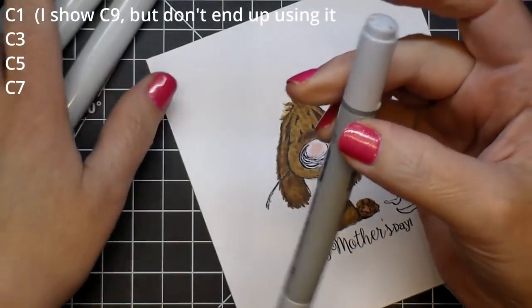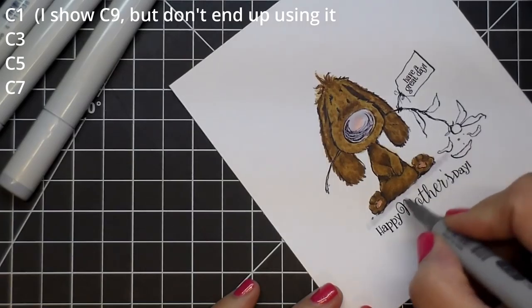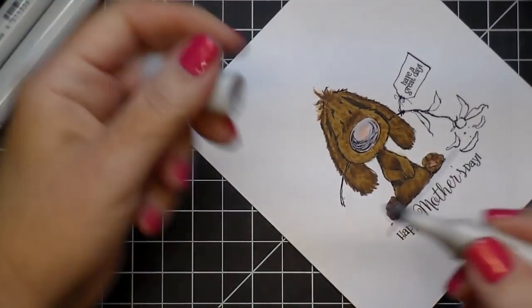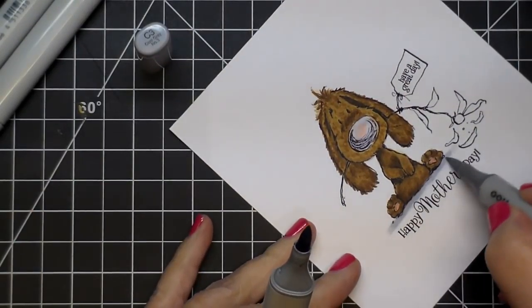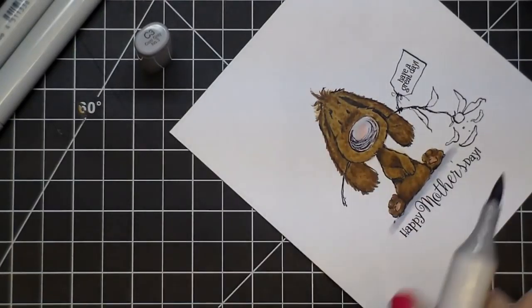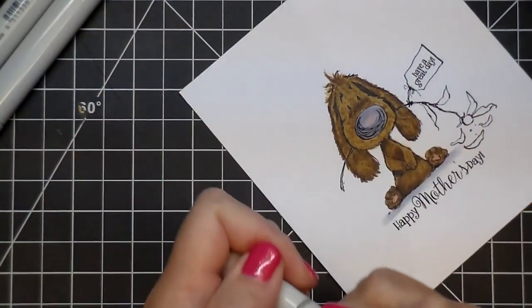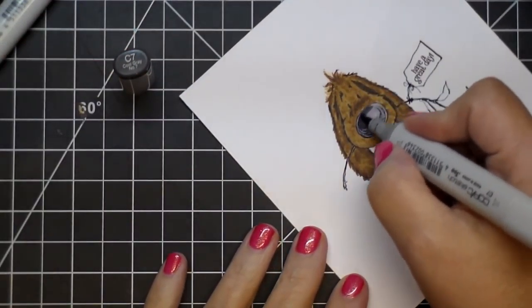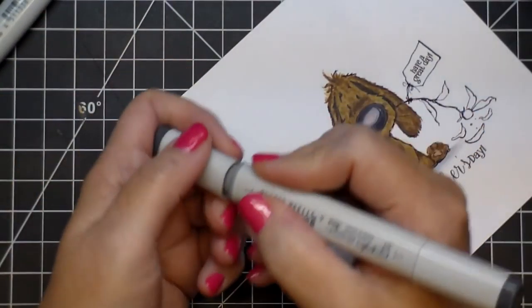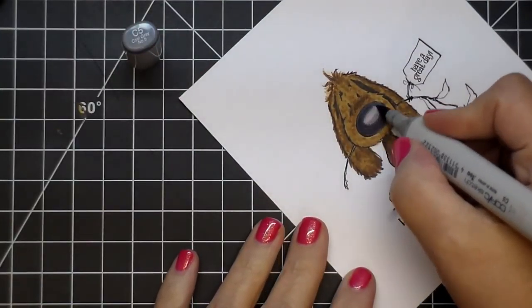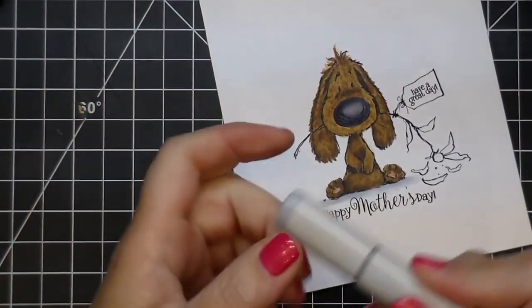Here I'm pulling out my cool grays: C1, C3, C5, and C7. I also showed you C9, but I end up not using C9, so I used a little bit of C1. I'm going back with some C3 and then I'll blend that back out with the C1, giving him a little shadow underneath. And then that's going to be for the base color of his nose, and I go a little bit darker. Now I'm adding the darkest, the C7. I'm going to leave a highlight right in the center of his nose, and then this is the C5, and then I blend that back out with the C3.